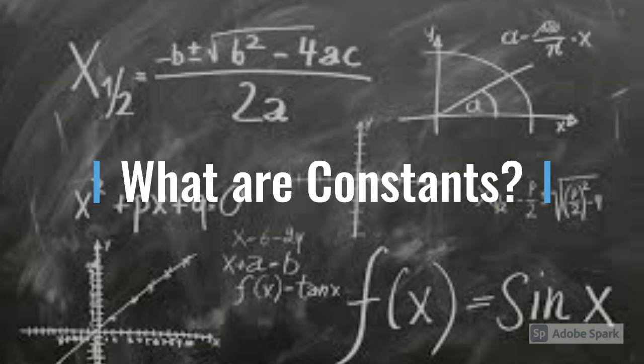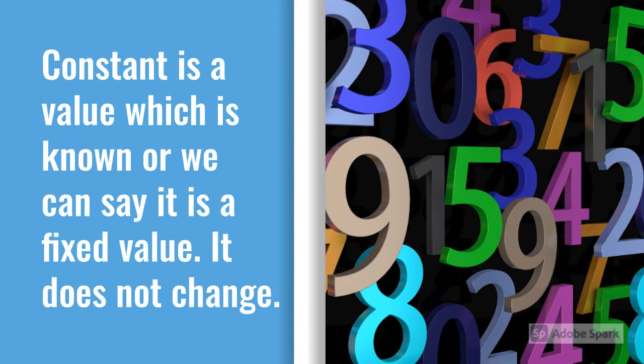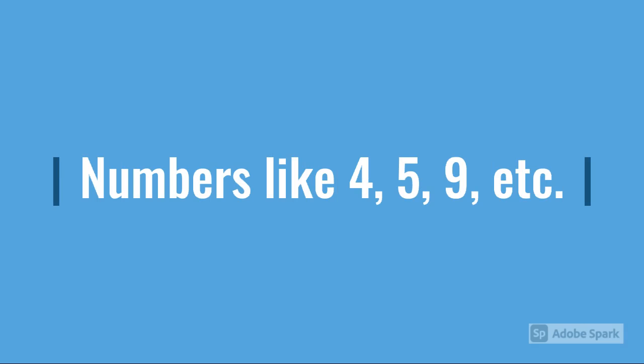What are constants? Constant is a value which is known or we can say it is a fixed value. It does not change. Numbers like 4, 5, 9, 100 or 1000 etc. are constant values.